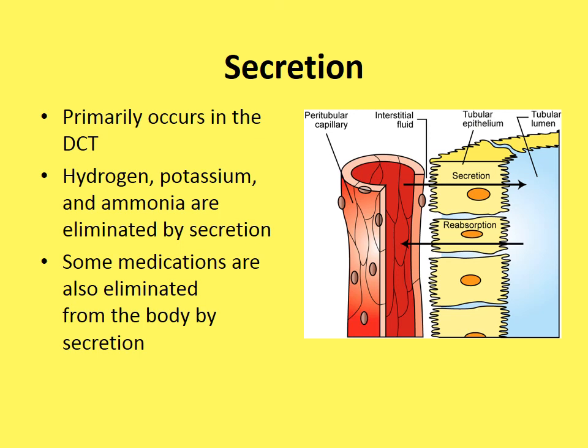Secretion primarily happens in the distal convoluted tubule — the furthest part of the nephron, just before the collecting duct. Hydrogen, potassium, and ammonia are eliminated by secretion, and some medications are also eliminated this way. The diagram shows secretion moving from the capillaries through the tubular wall into the tubular space, which then becomes urine.